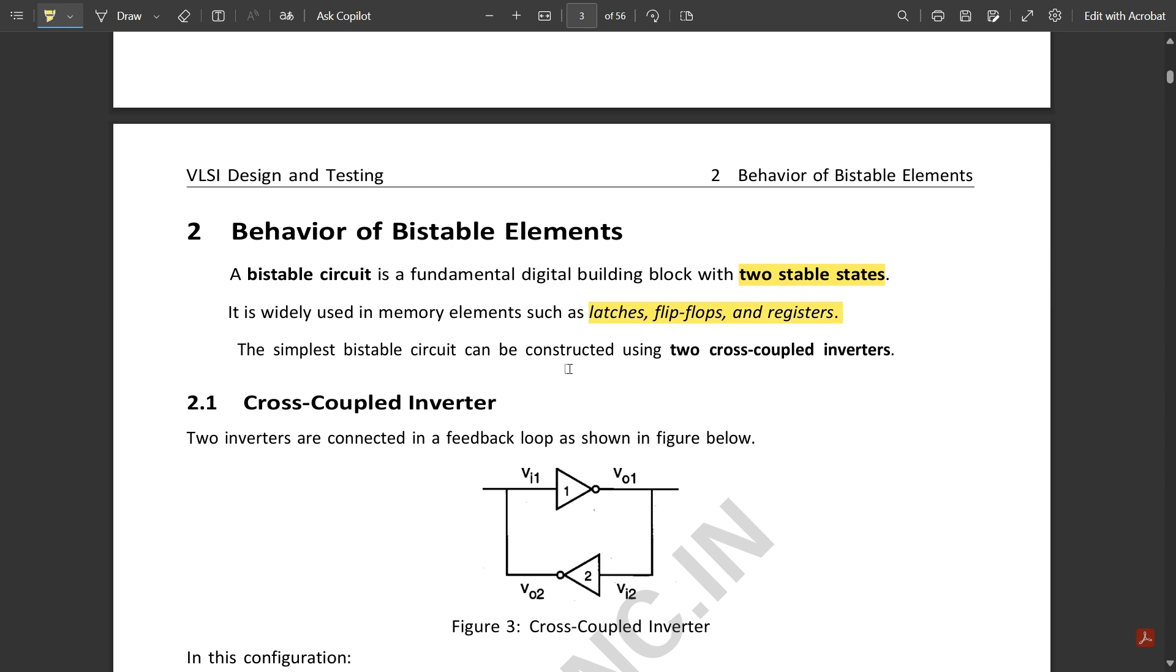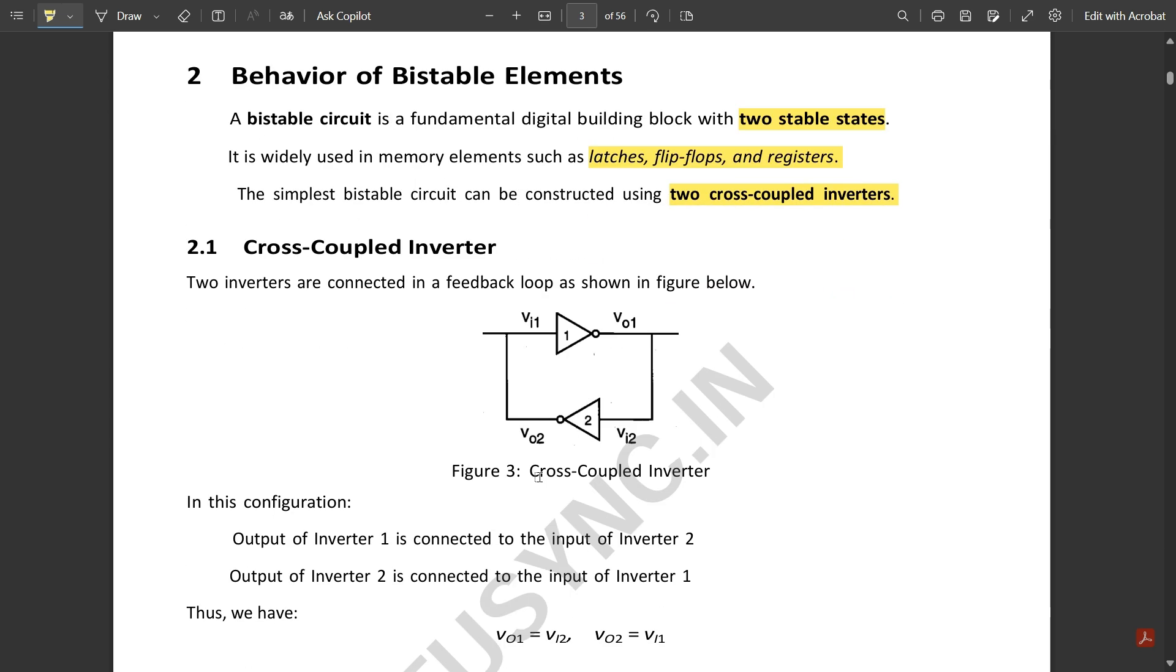The simplest bistable circuit can be constructed using two cross-coupled inverters. This is one simple example of a bistable circuit, the cross-coupled inverter. An inverter works such that whatever input is given, its opposite is the output.